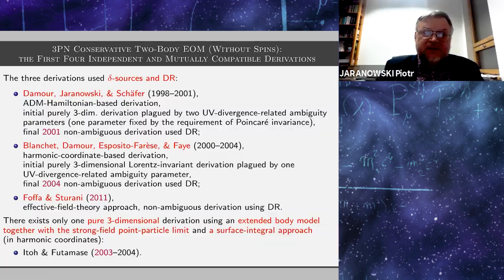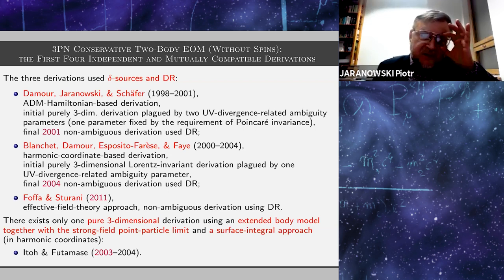Now, some more historical remarks on the derivation of the 3PN and 4PN equations of motion. I displayed here the first four independent and mutually compatible derivations. The first one was done by DJS and published in 2001. The second one was published in 2003 by Itoh and Futamase—it's an interesting derivation because it is the only one performed in three dimensions using some extended body model with so-called strong field point particle limits together with a surface integral approach. The third derivation was by Blanchet, Amours, Posit, Fares and Phi, published in 2004. Finally, the first effective field theory approach derivation was done by Fofa and Sturani in 2011.